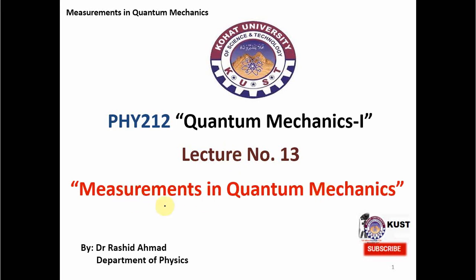The idea of measurements in quantum mechanics is quite different than the idea of measurements in classical mechanics. The reason is that the measuring operators in quantum mechanics actually interfere with the physical observable which is to be measured, and this interference actually shifts the state of a system to the next state, and this new state remains there until a new measurement is made.